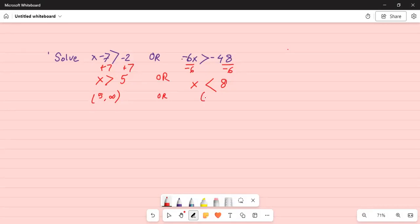Or x less than 8 means minus infinity comma 8, open brackets on both sides. So when you are union, this 'or' is equivalent to union. You might as well write 5 to infinity, open brackets on both sides.